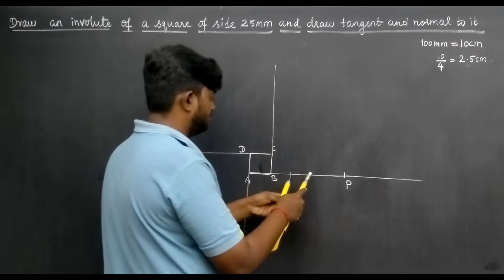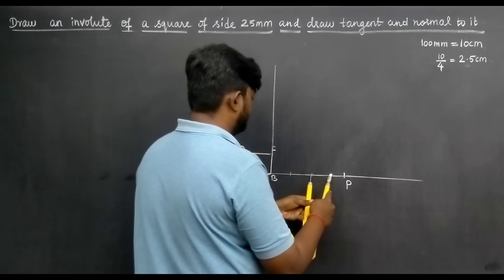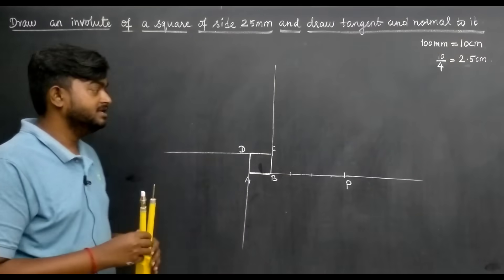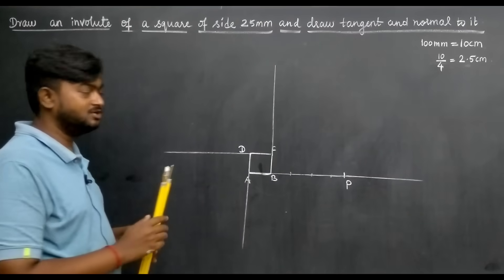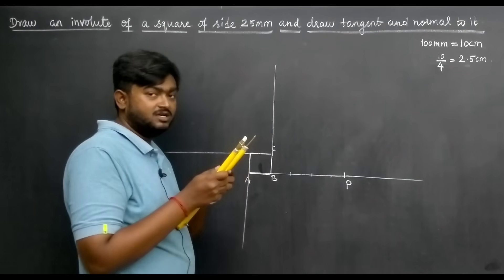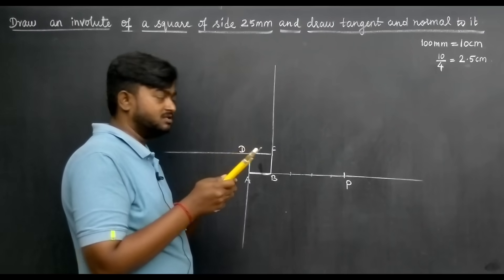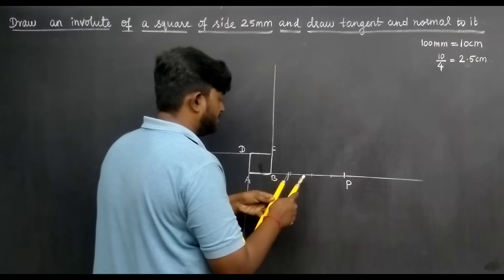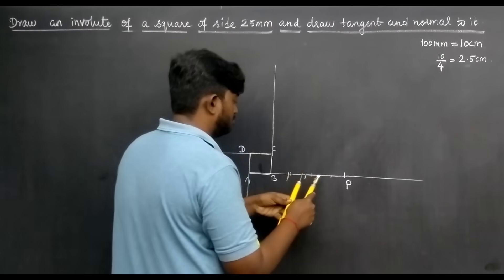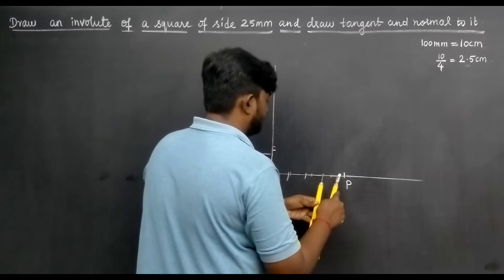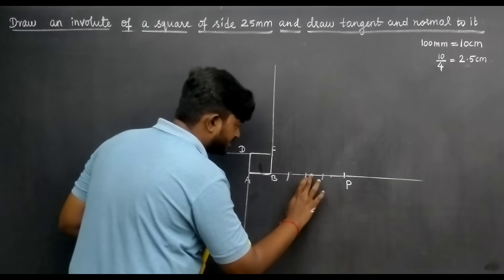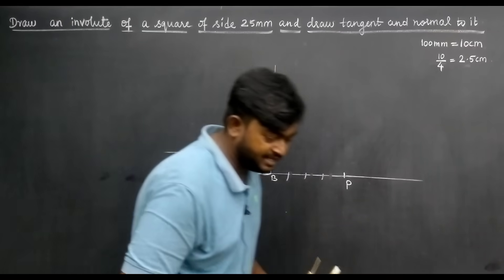Mark 1, 2, 3, 4 points. The points are in excess. We use trial and error method. Adjust the compass a little bit. Now mark the points: 1, 2, 3, 4. The points are correct. This is how we solve it using trial and error method.